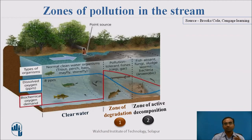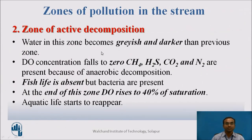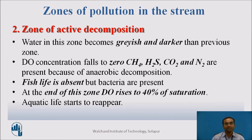In the Zone of Active Decomposition, the water is grayish and darker than the previous zone. DO concentration falls to zero. Due to anaerobic decomposition, methane, H2S, CO2, and N2 gases are present. These hazardous gases, combined with the absence of oxygen, cause aquatic and fish life to be completely absent. Toward the end of this zone, DO starts to rise again toward 40% of saturation.